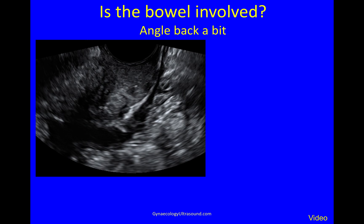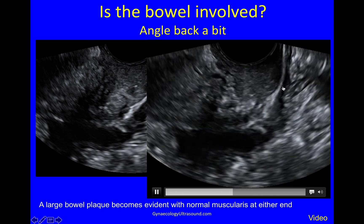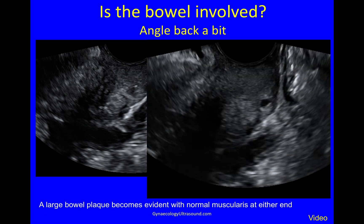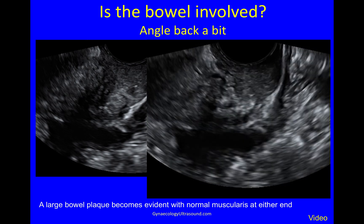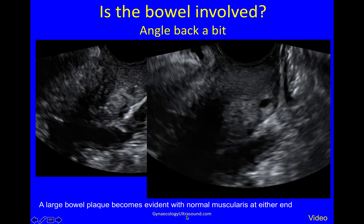So is the bowel involved? To see that we need to angle back a bit, posteriorly. Always stay gentle and remind the patient to let her knees go floppy. When you angle back a bit you can see some normal muscularis layer here, very low down. The dark is the vagina, the white is ligaments, and this is the muscularis layer. It's normal to here, and then you can see that this thickens out — this is abnormal muscularis. If we look at that on a video, you can see normal muscularis there, then it becomes abnormal and all of this is abnormal halfway up to the back of the uterus. We're angling back looking to see how the normal muscularis becomes thick and abnormal, and then at this point we would see it becoming thin and normal again.